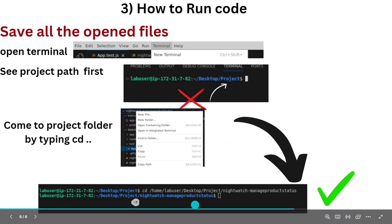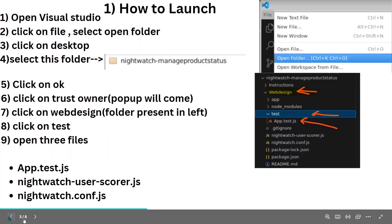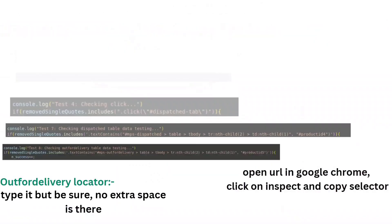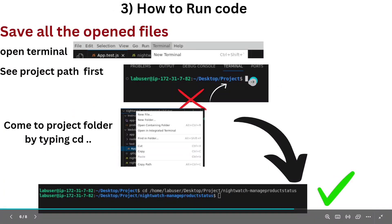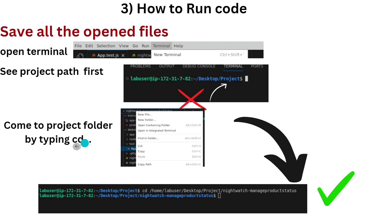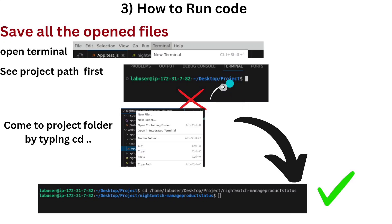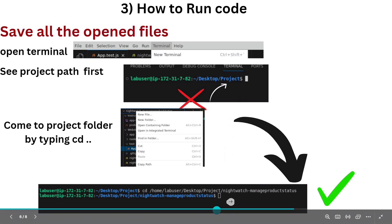You need to navigate to the correct project folder. Right-click on the project folder and select 'Copy Path', then in the terminal type 'cd', add a space, and paste the path. You can also type it manually: 'cd nightwatch-manage-product-history'. Press Enter. Once you reach this path, you are ready to install and run.